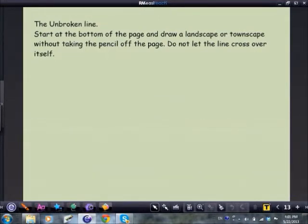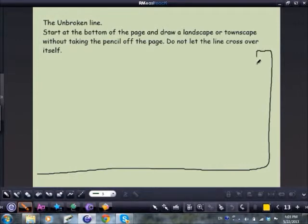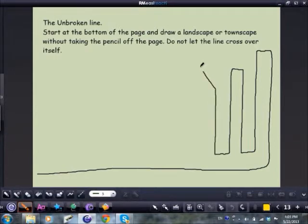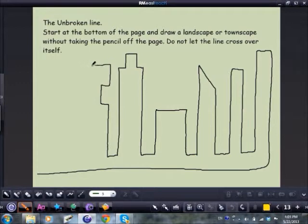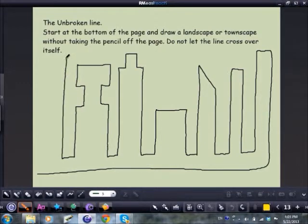The unbroken line. Start at the bottom of the page and draw a landscape or townscape without taking the pencil off the page. Do not let the line cross over itself. Different date buildings. Keep going. Just one more. Carefully, around the edge, so that they had a silhouette of the landscape which they could mount on another piece of paper. And then when they'd done that, they then put the detail in.